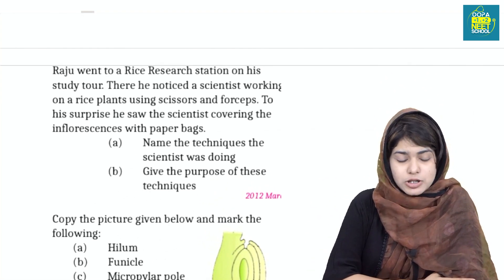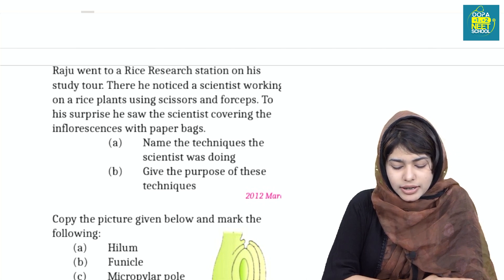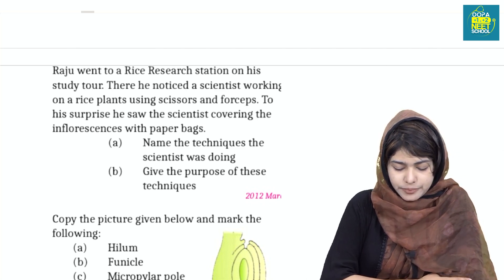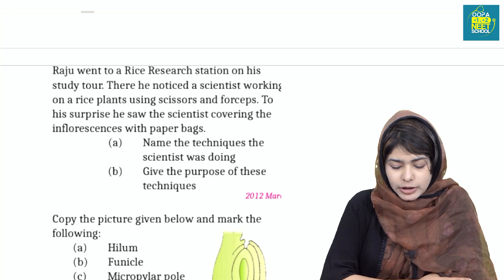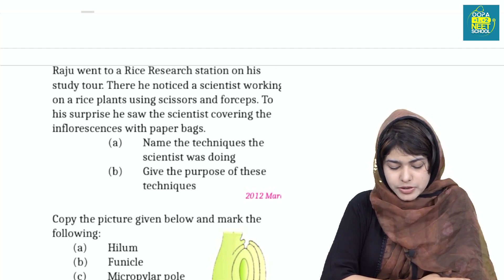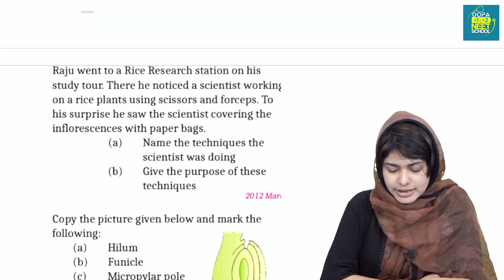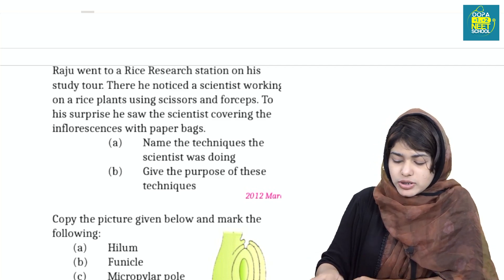In March 2012, Raju went to a rice research station on a study tour. There he noticed a scientist working on a rice plant using scissors and forceps. To his surprise, he saw the scientist covering the inflorescence with paper bags. Name the technique the scientist was doing and give its purpose.